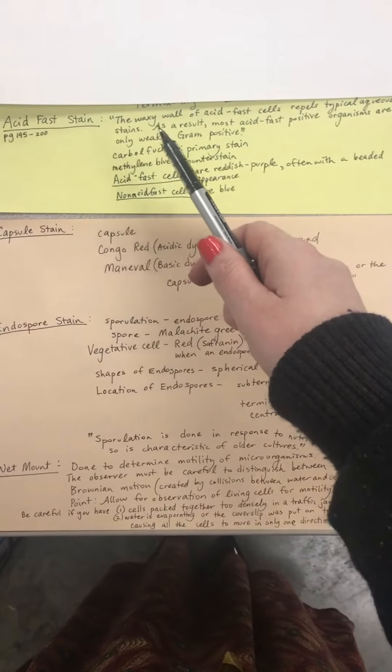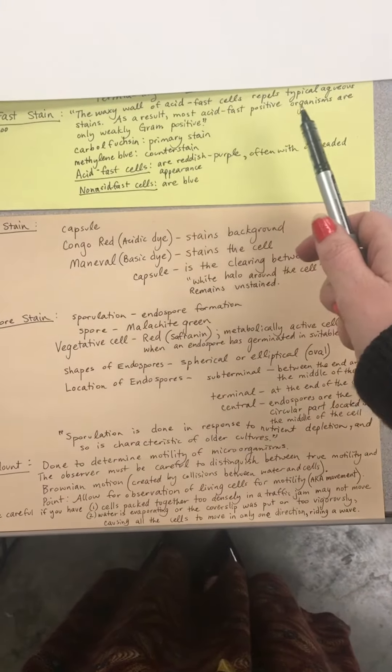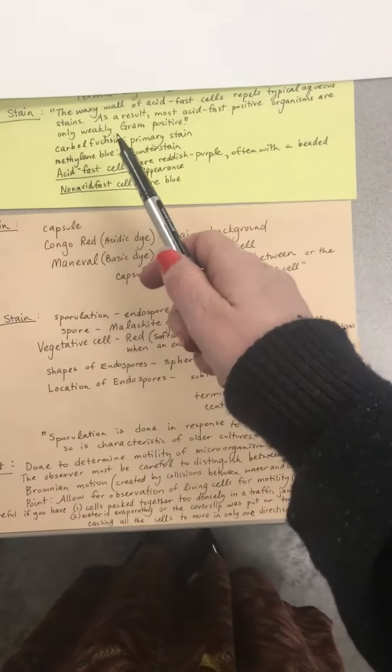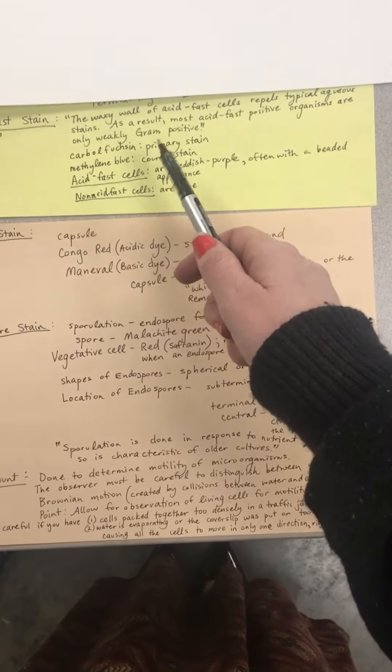With your acid fast stain, the waxy wall of acid fast cells repels typical aqueous stains. As a result, most acid fast positive organisms are only weakly gram positive.